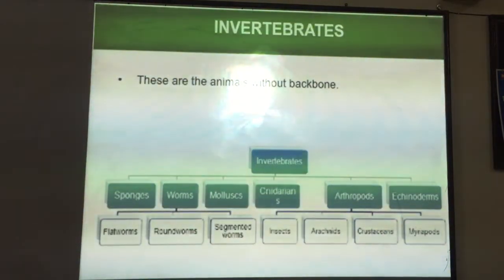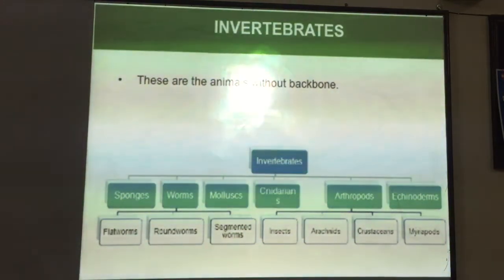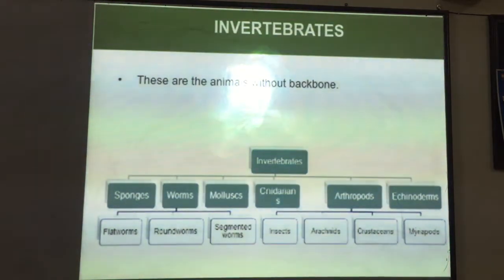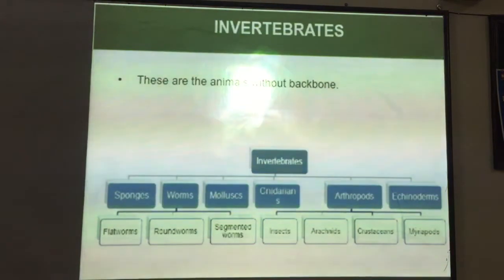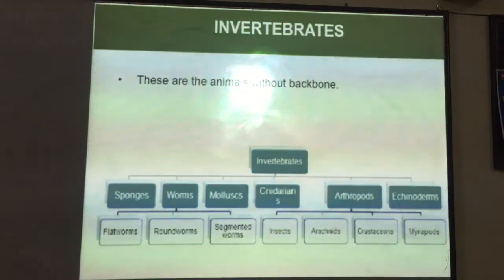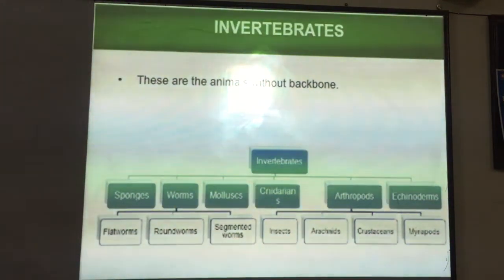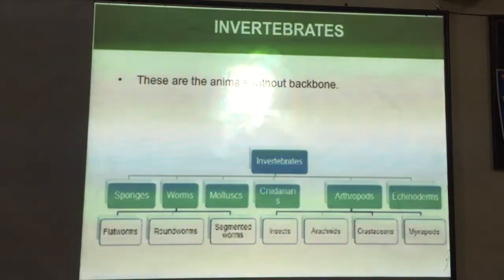Now we will talk about invertebrates. Invertebrates are those animals that do not have a backbone. These are smaller and simpler than vertebrates. Invertebrates can be of six different types: sponges, worms, mollusks, cnidarians, arthropods, and echinoderms. Now we will study these invertebrates one by one.